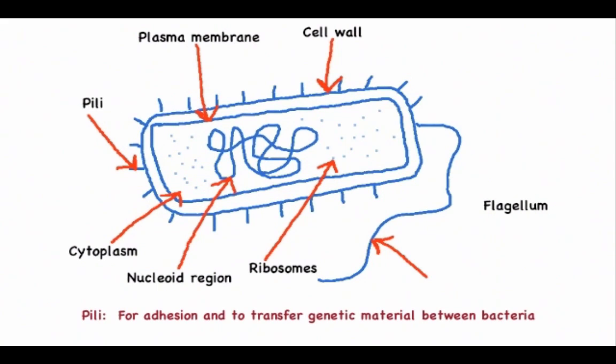Moving on to pili, these are small hair-like appendages around the outside of the cell that are used for adhesion and transfer of genetic material between bacteria.